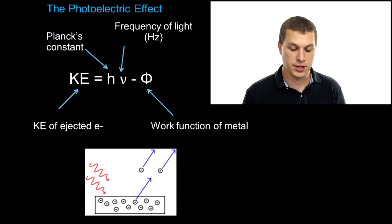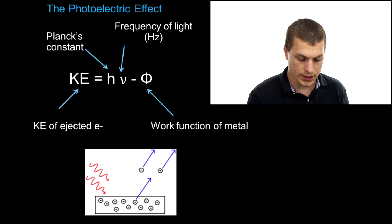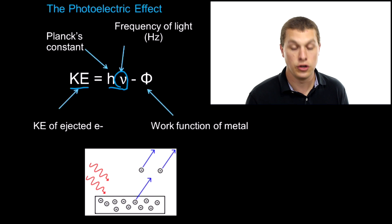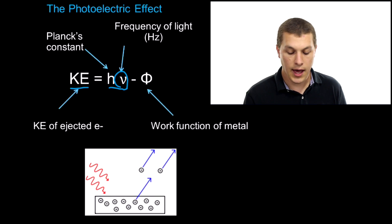We're going to use this equation here, which connects the kinetic energy of the ejected electron to the frequency of the light used. The last piece of information we're going to need is the binding energy, or work function, of the metal we're using. A common question that you might have associated with the photoelectric effect is to calculate the velocity of an electron.